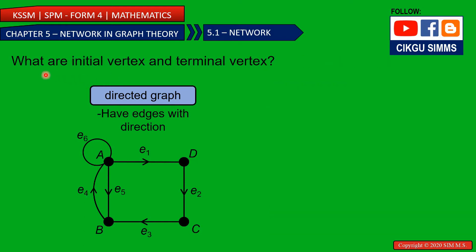And then what are initial vertex and terminal vertex? So here are the examples. The edges are given names. For example, this edge is called E1. And then this edge is called E2. So what are the initial vertex? Let's see the first edge. First edge for vertex A and vertex D.